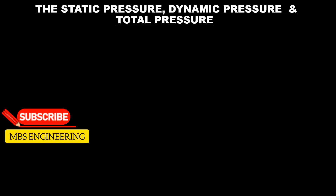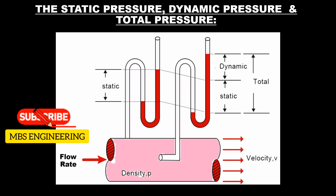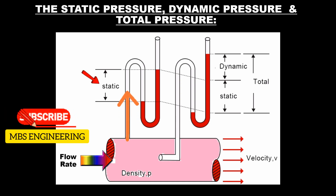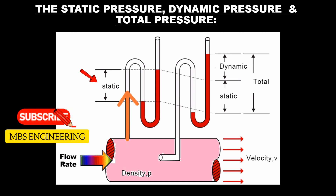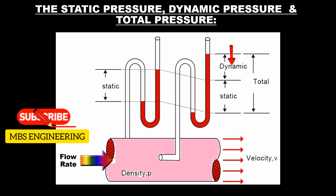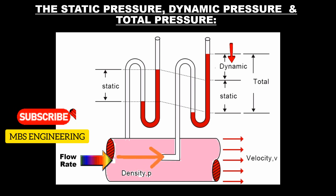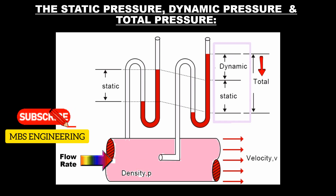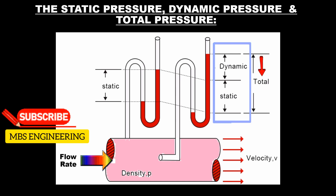Comparing static, dynamic, and total pressure: static pressure is the pressure exerted by a fluid when it is at rest, measured perpendicular to the fluid surface and independent of the direction of flow. Dynamic pressure is the pressure exerted by fluid movement, measured parallel to the direction of flow and depends on the velocity of the fluid. Total pressure, also called stagnation pressure, is the sum of static pressure and dynamic pressure.